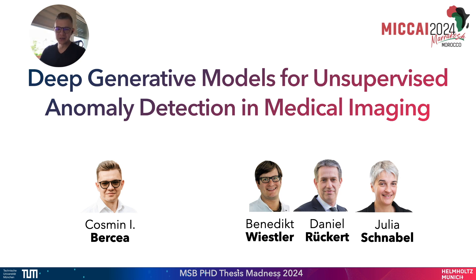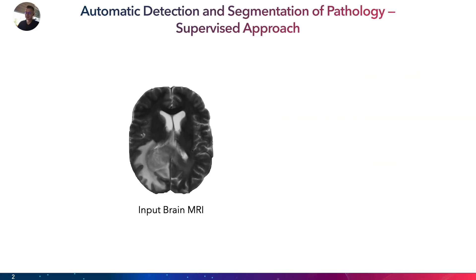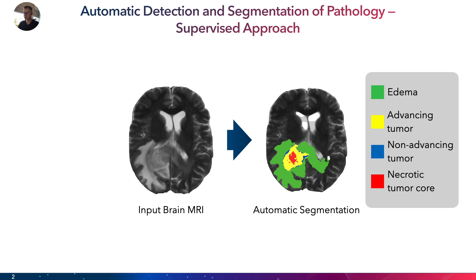Hi, I'm Kosmin and I'll present to you my work on anomaly detection in just three minutes. This is an image of a brain map and the idea or the goal of anomaly detection is to segment the pixels that belong to the anomaly, in this case a brain tumor.